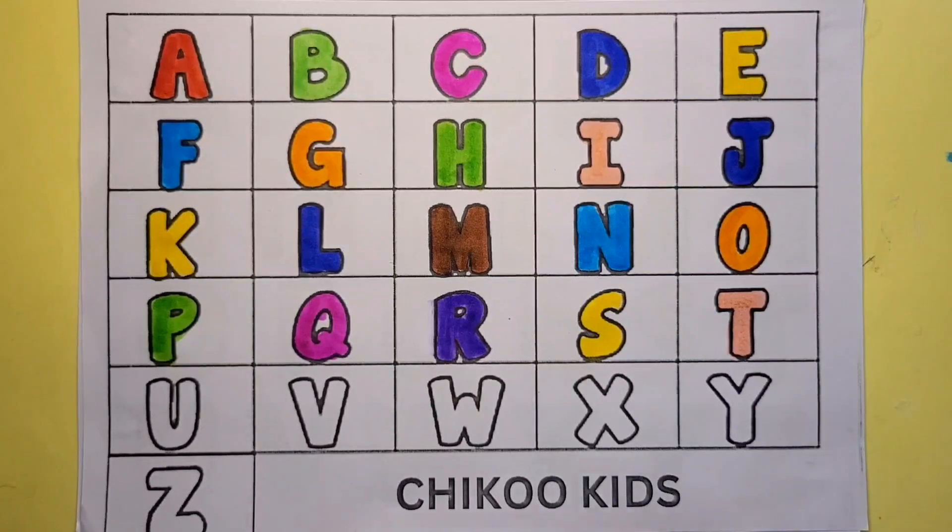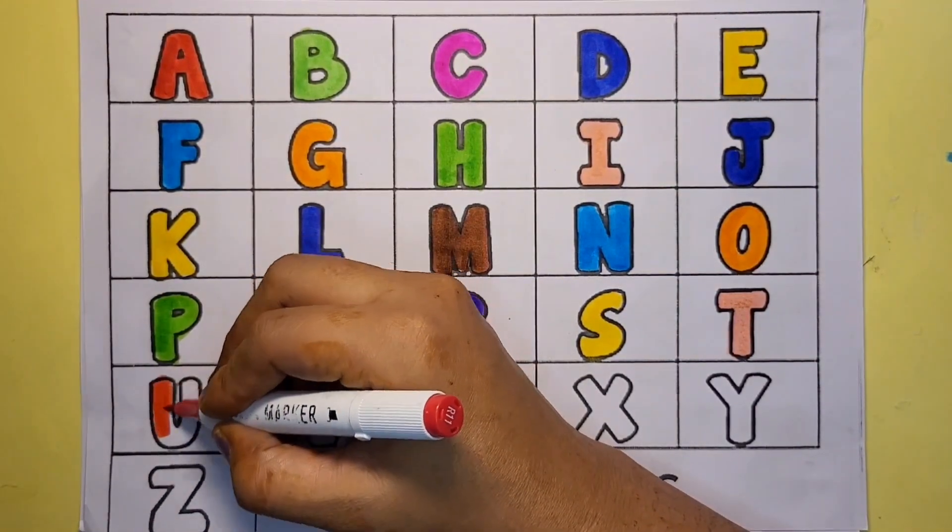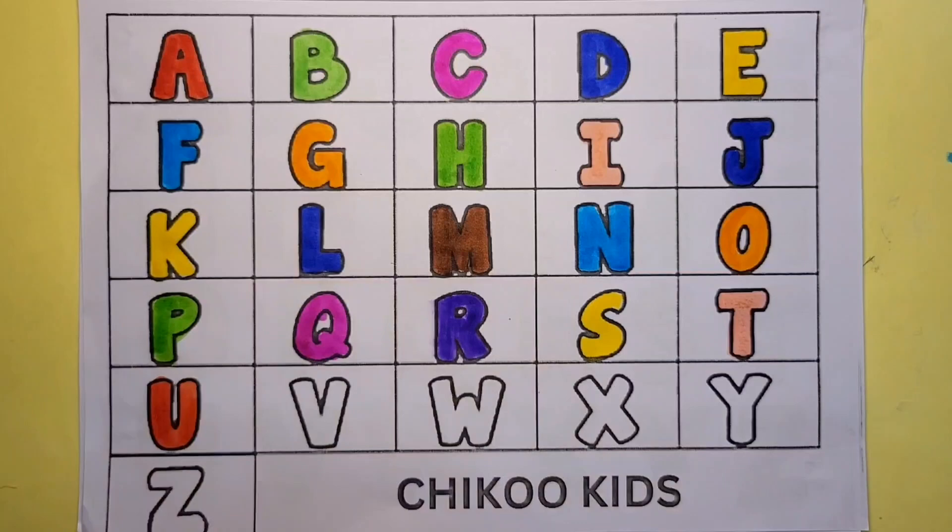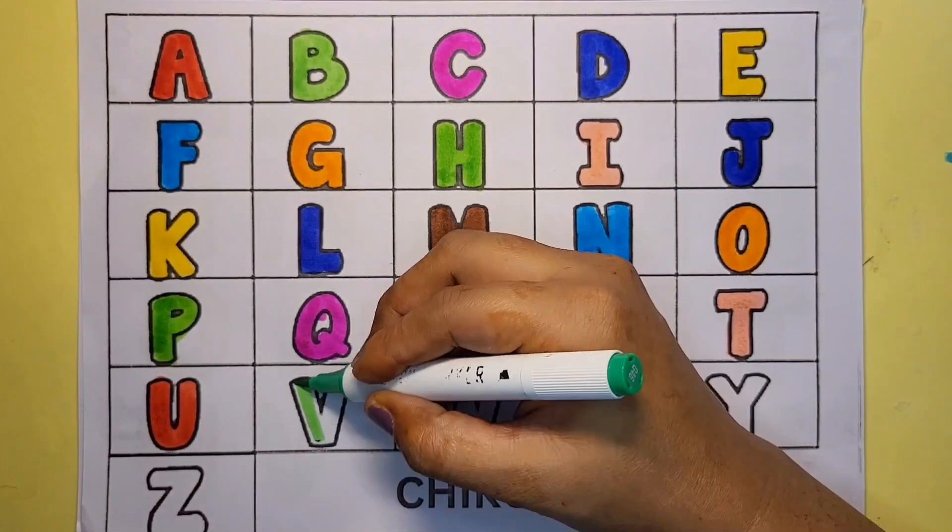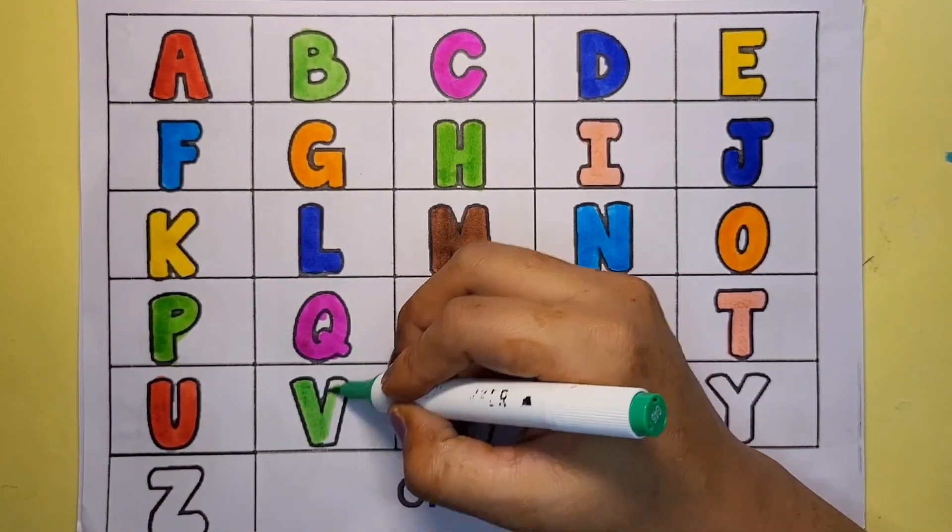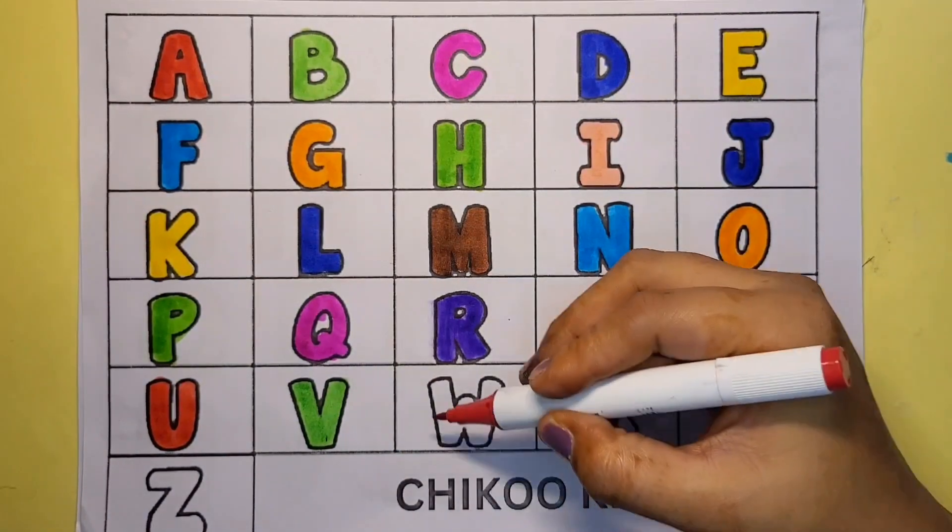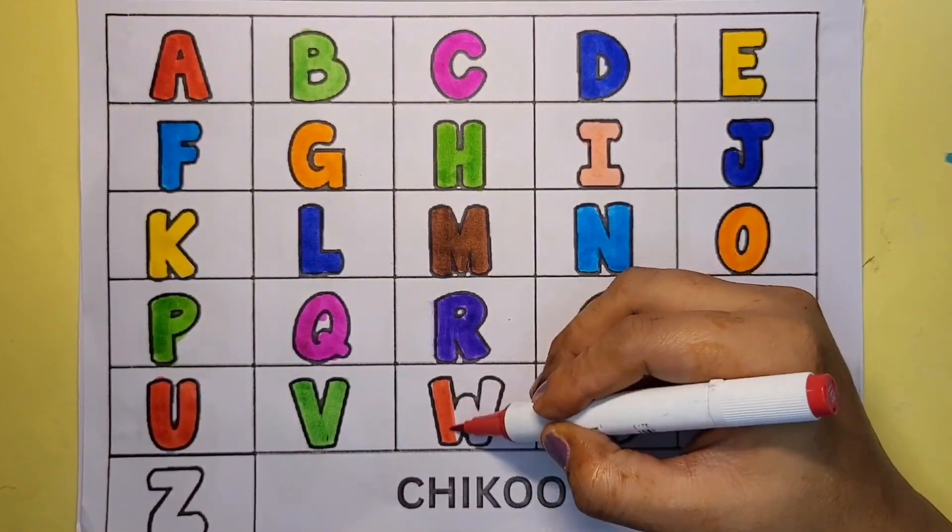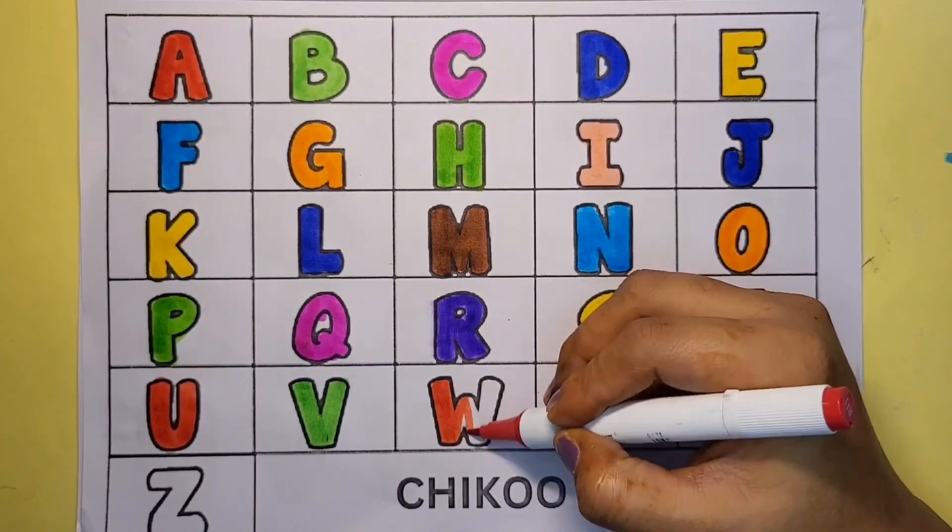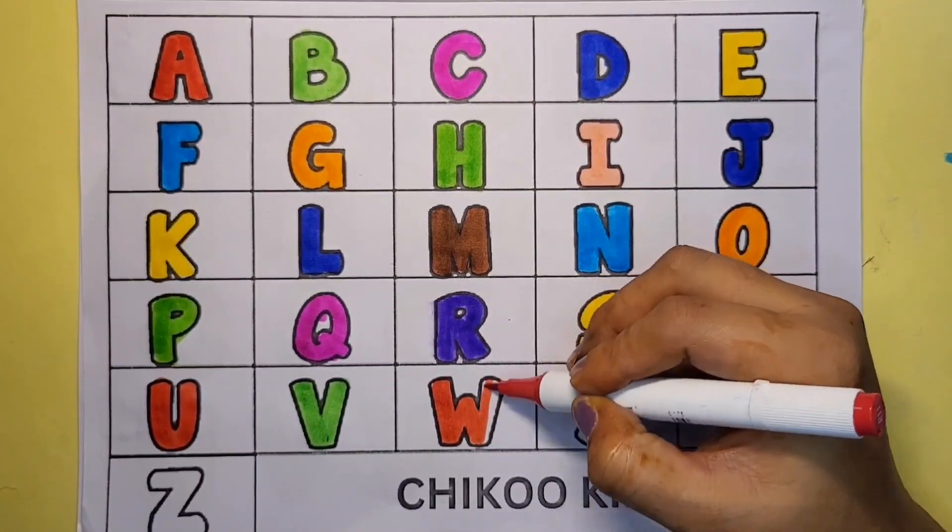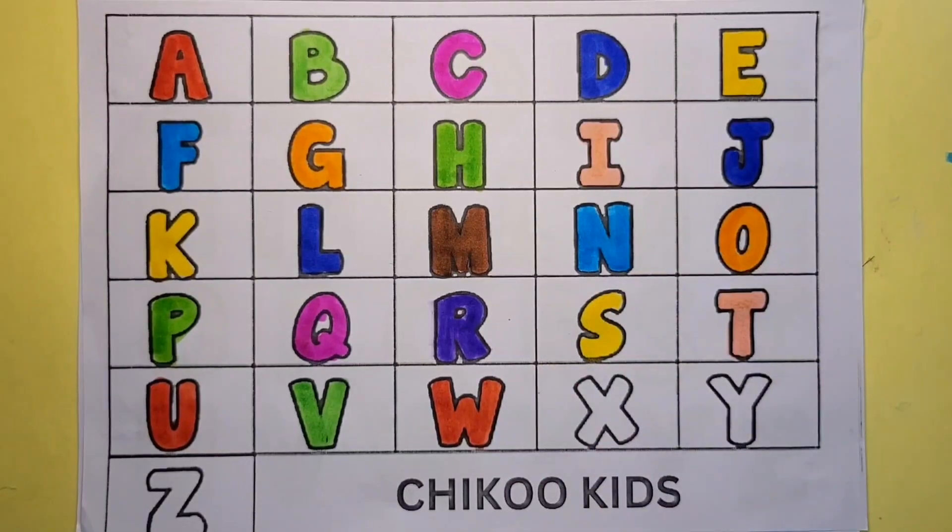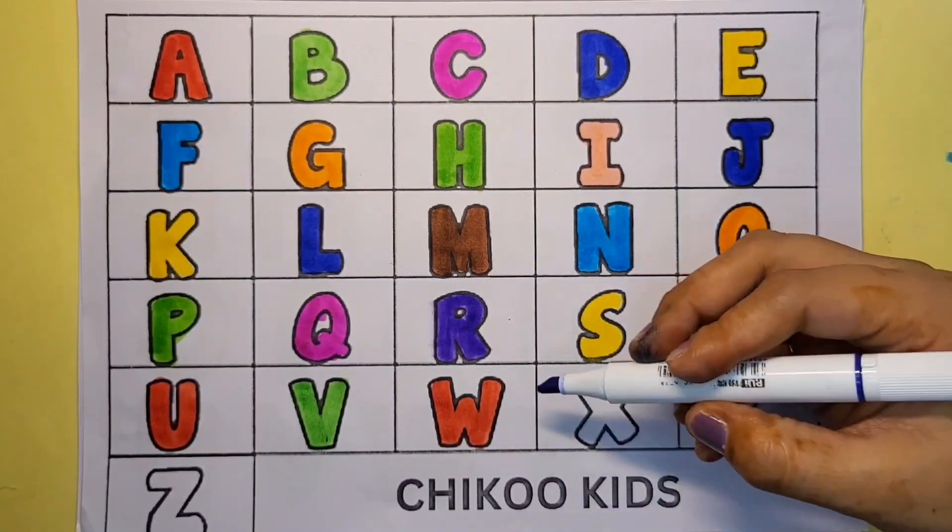Red color U. U for umbrella. Green color V. V for van. Red color W. W for watermelon. X for xylophone.